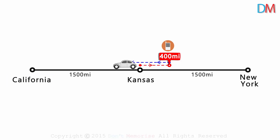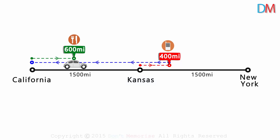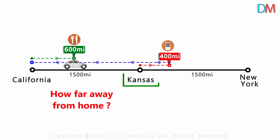You decide to rush towards California. It all goes well — you finish your meeting in California and then you are on your way back home. After covering around 600 miles, you decide to stop for lunch. And then you start wondering about two things: first, how far away from home are you — which means how far are you from Kansas? And second, what's the total distance you've covered?